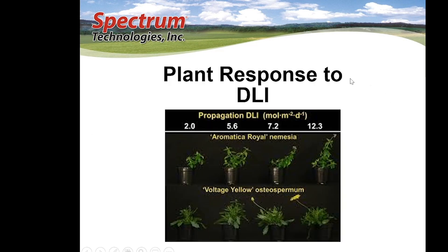Here's the plant response to daily light integral at four different levels: 2 moles per day, 5.6, 7.2, and 12.3 — shown across two different types of plant material. As the amount of daily light integral increases, so does plant quality.